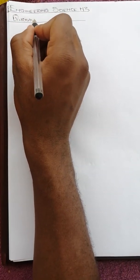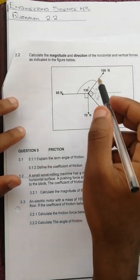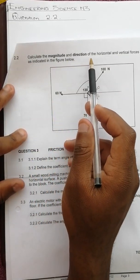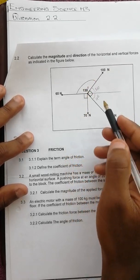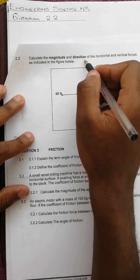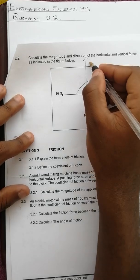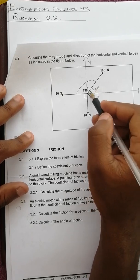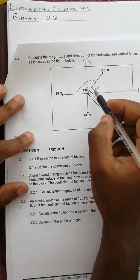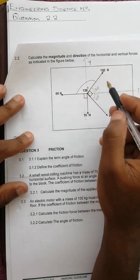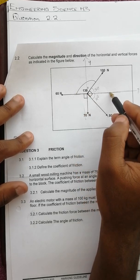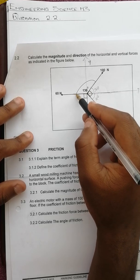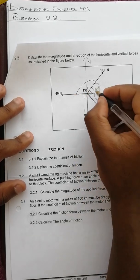Question 2.2 — we are given a diagram and asked to calculate the magnitude and direction of the horizontal and vertical forces. The vertical direction is Y and horizontal is X. Taking this as our reference axis, since this is a straight line the angle on a straight line equals 180 degrees, so 180 minus 130 gives us 50 degrees remaining.